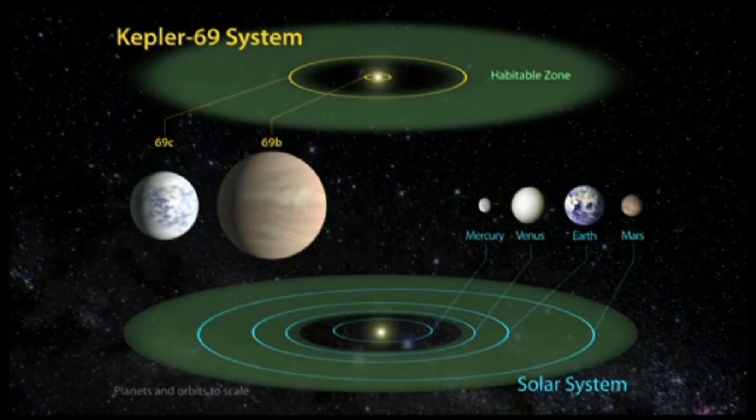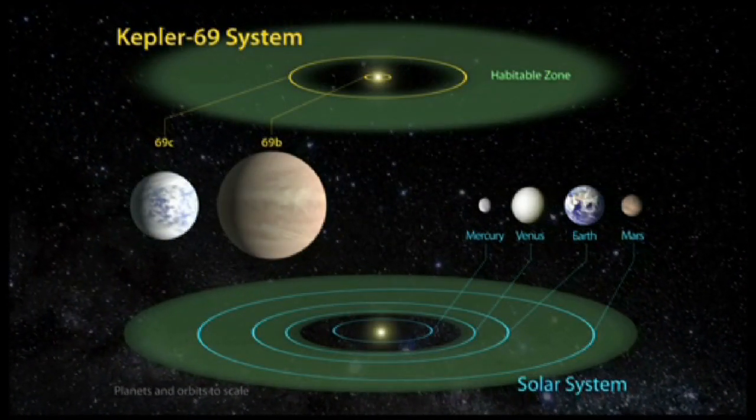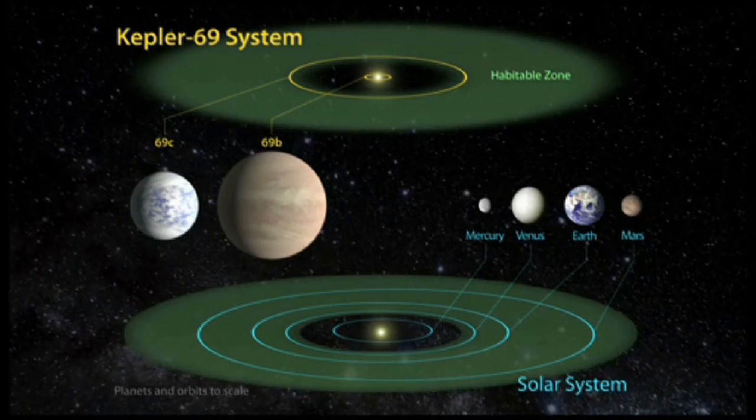The inner planet, Kepler 69b, is 2.2 times the size of Earth and orbits every 13 days.